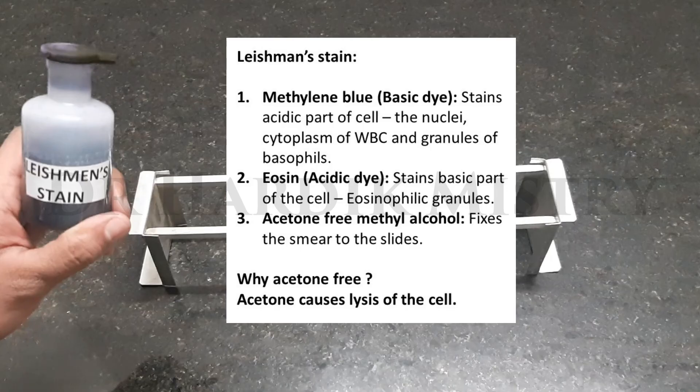Eosin stains the basic part of the cell, for example eosinophilic granules. Acetone-free methyl alcohol fixes the smear to the glass slides. Why are we using acetone-free methyl alcohol? Because acetone causes lysis of the cell.